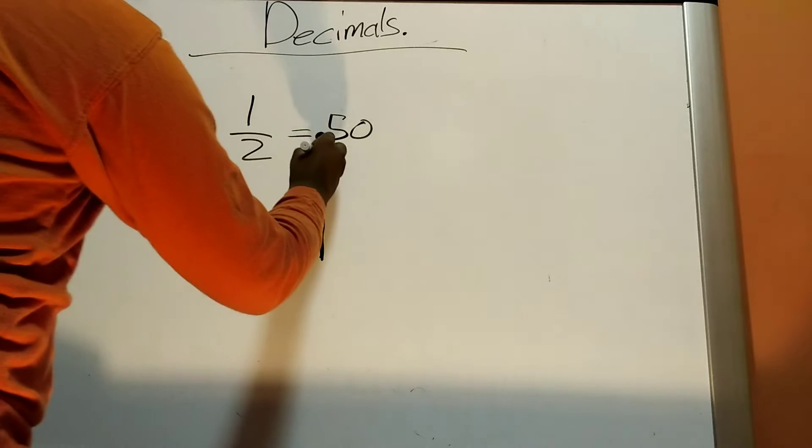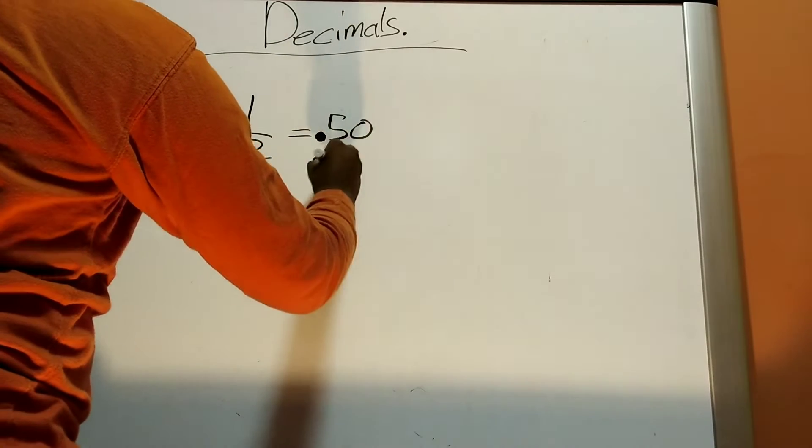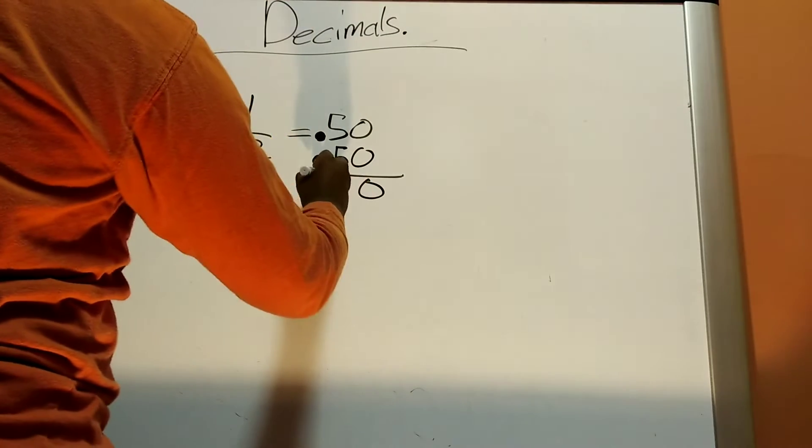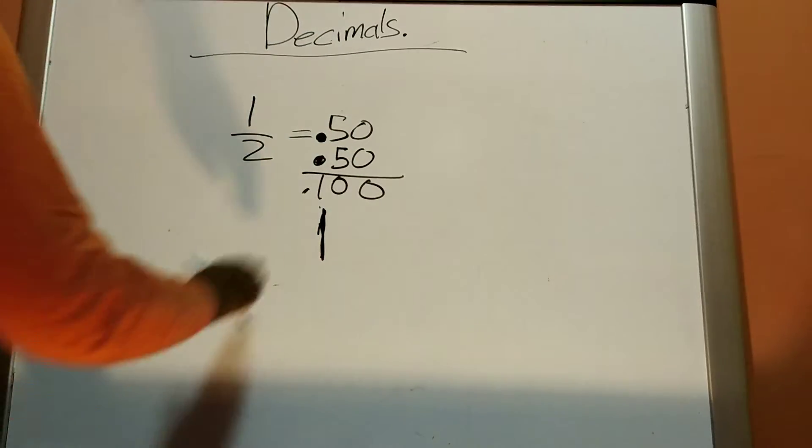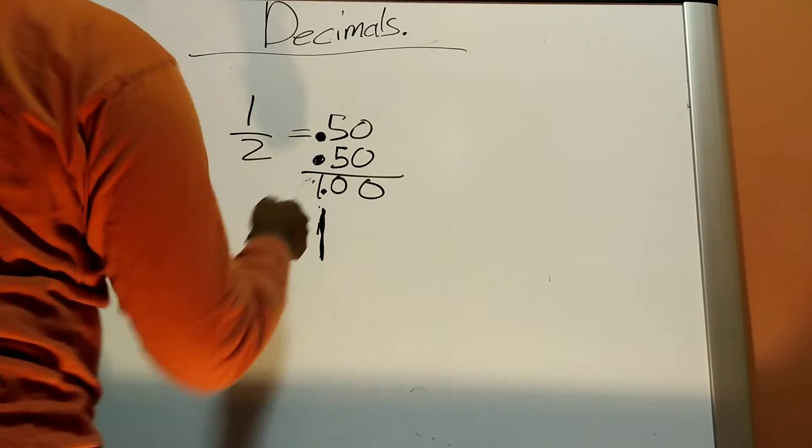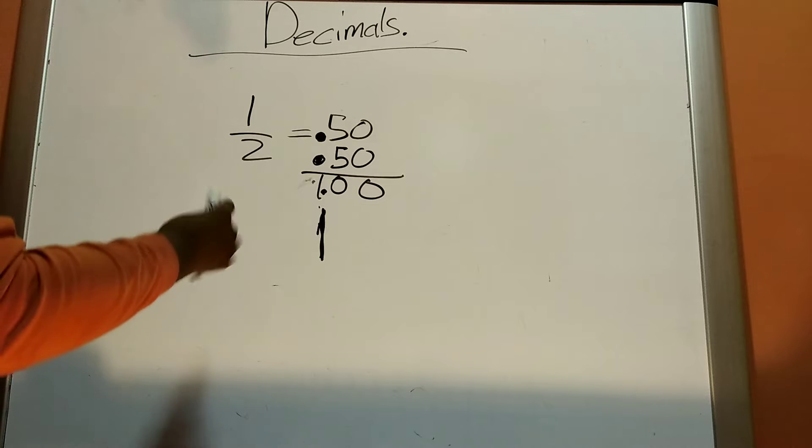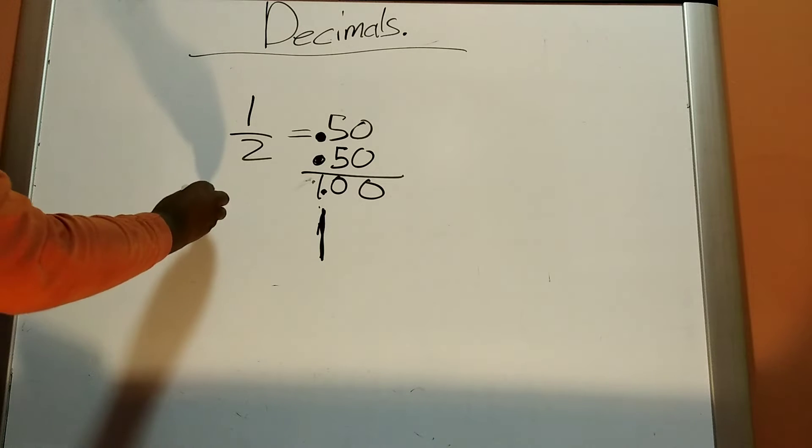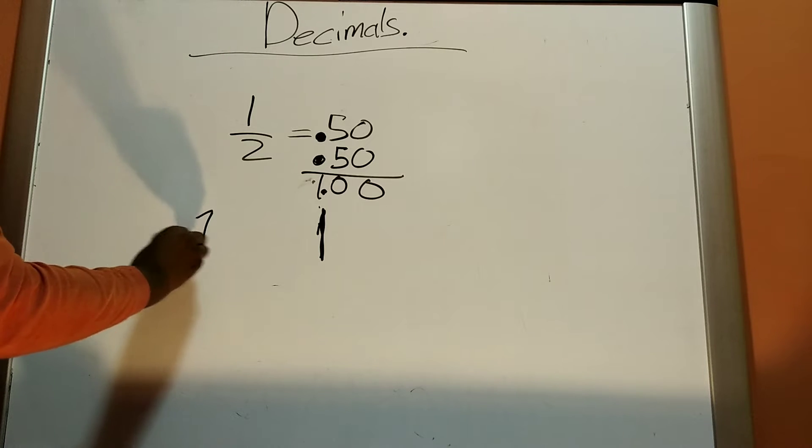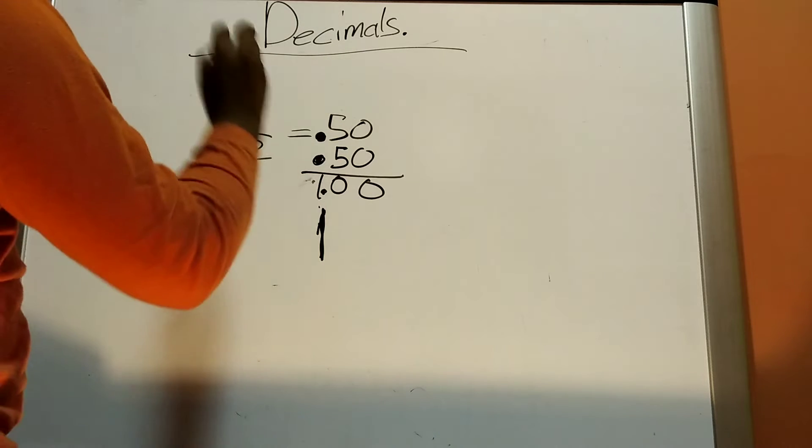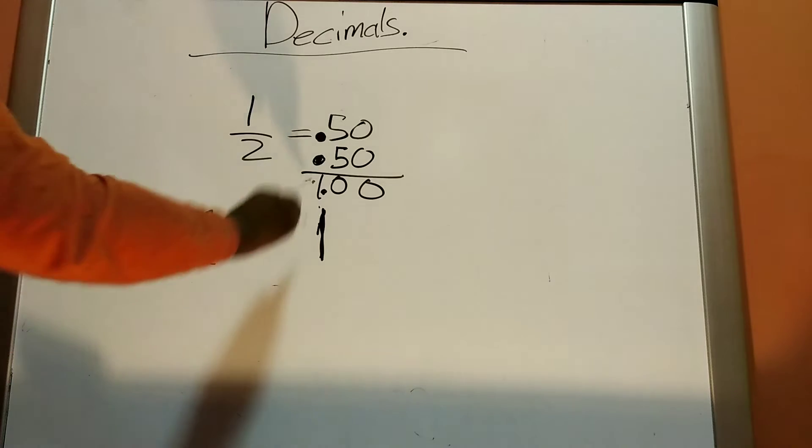Now, if we added another 50 hundredths, then we would get 100, or when you put the decimal in, then you would have 1.00. This would be equivalent to just 1. Because you had two decimals and they both were a half of a number. Since you added both of those together, now you have one number.